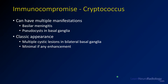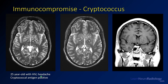Cryptococcus can have multiple manifestations. The most common is basilar meningitis, or gelatinous pseudocysts which fill the perivascular spaces of the basal ganglia, manifesting as multiple cystic lesions there with minimal or no enhancement. Here a 25-year-old with HIV has a positive cryptococcal antigen, and you can see the perivascular spaces are very enlarged in the basal ganglia. While enlarged perivascular spaces can be seen in older patients with volume loss, it would be very unusual in a 25-year-old. With a positive cryptococcal antigen, this is most likely active cryptococcus. On post-contrast imaging there is very little, if any, enhancement — confirming enhancement is not a key feature of this infection.